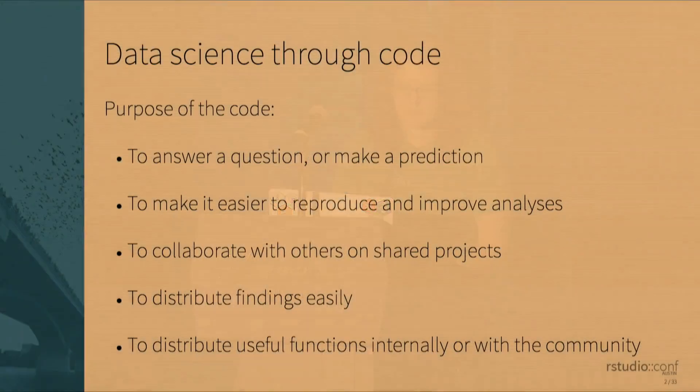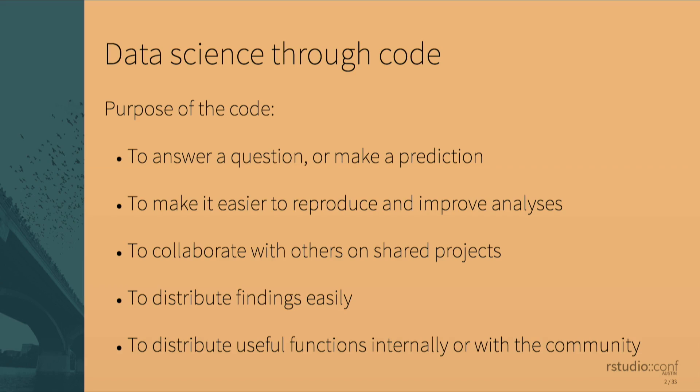Let's start by making sure we understand why we're writing code in the first place. What we're trying to do is data science through code. We're trying to answer questions and make predictions that are difficult to do manually, so we automate it in the code. Ideally, we do so in a way that is reproducible and easily augmented and that facilitates collaboration and outcome distribution. And if we come up with some code that we think would be useful to others, we can share that too if we write a package for it.